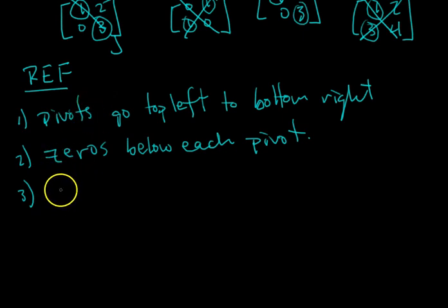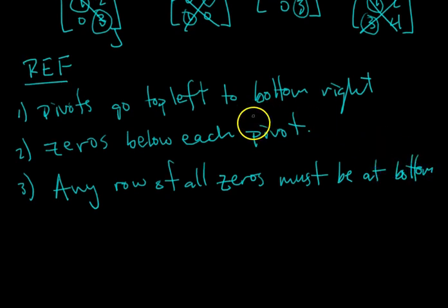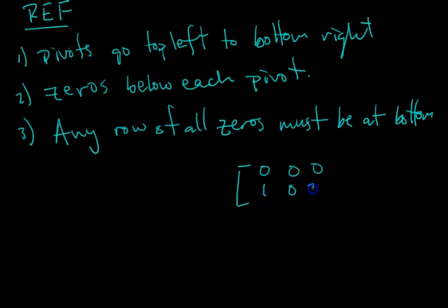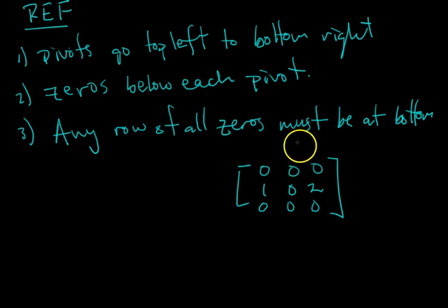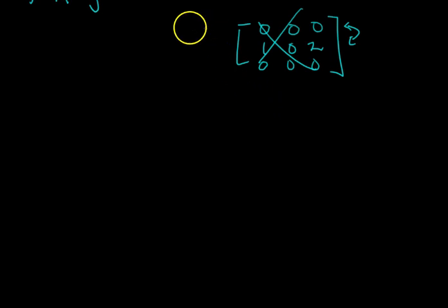The third condition is if you have any row of all zeros, it has to be at the very bottom of the matrix. If you had a matrix with two rows of all zeros, they would all have to be at the bottom. So if a row of all zeros appears above a non-zero row, you would have to switch those rows for the matrix to be in row echelon form. As it is, it does not satisfy condition three.